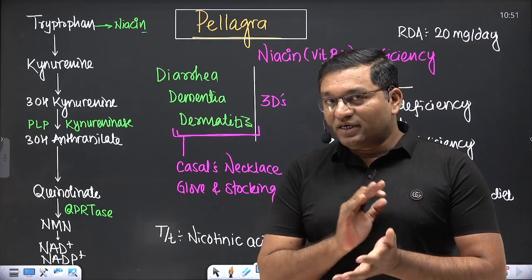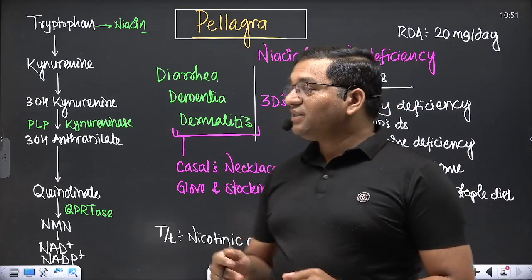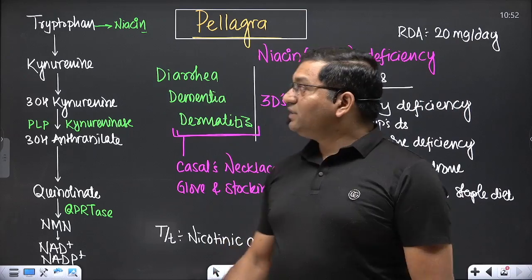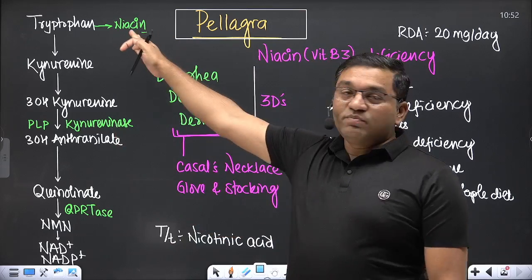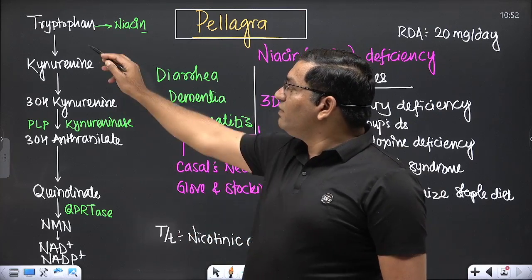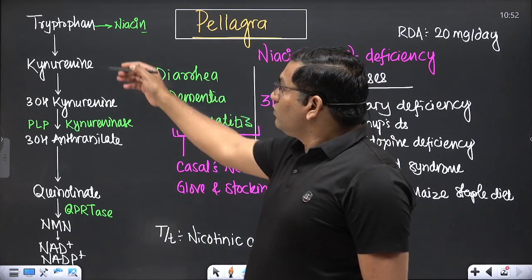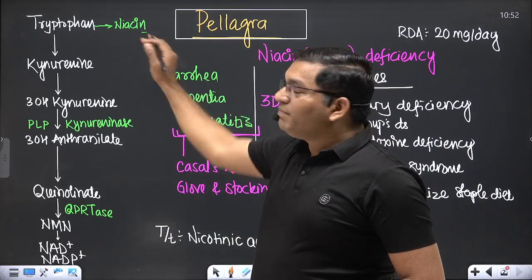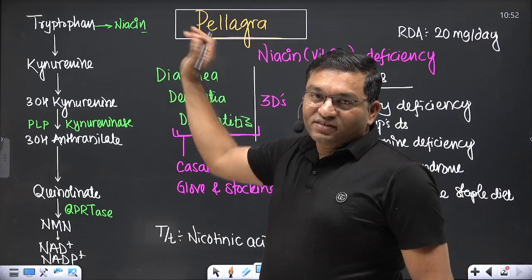The RDA of niacin is 15 to 20 milligrams per day. Some amount of niacin is also produced from the essential amino acid tryptophan — only about 10% of tryptophan is diverted for niacin (NAD) production, fulfilling 10% of the requirement. Approximately 60 milligrams of tryptophan will give 1 milligram of niacin.